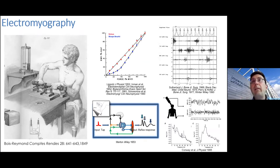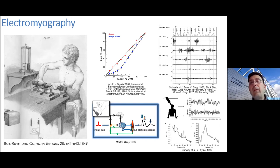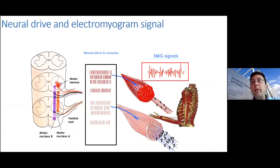Some of the classic uses of EMG include estimating muscle force, studying coordination of locomotion, and looking at connectivity among different parts of the system. The information extracted from EMG is not only related to the electrophysiology of the fiber membrane, but also to neural structures, because the generation of EMG is determined by the activity of neural cells in the spinal cord — the lower motor neurons.